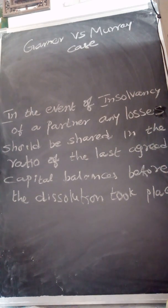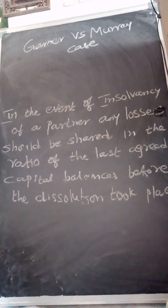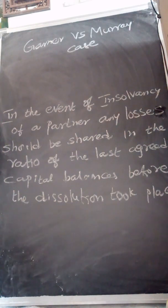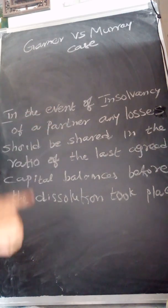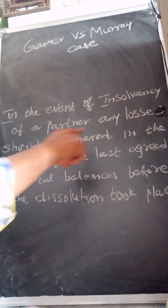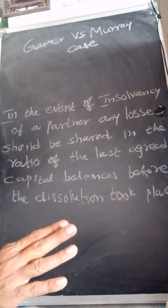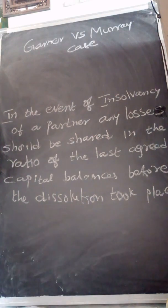This is all about the Garner vs. Murray case — a repeated exam question in advanced accounts, found in Unit 2 on dissolution and insolvency of a partner. In the event of insolvency of a partner, any losses should be shared in the ratio of the last agreed capital balances before the dissolution took place. I wish you all the best, my dear students. Do subscribe to my channel — this is a simple, interesting, and scoring topic. Thank you.